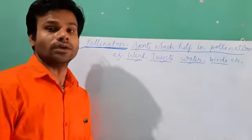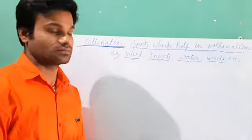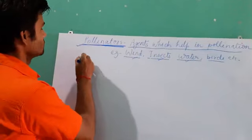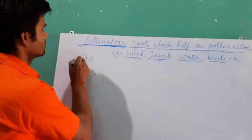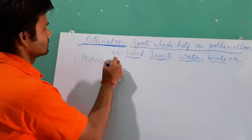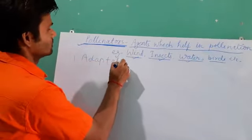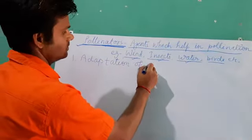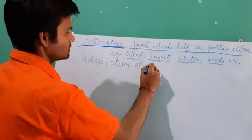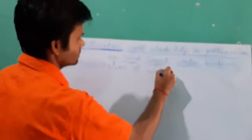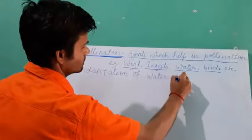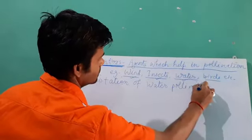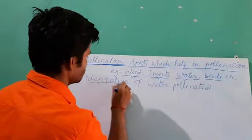This follows the true NCERT pattern. Now the first adaptation — adaptation of water pollinated flowers.